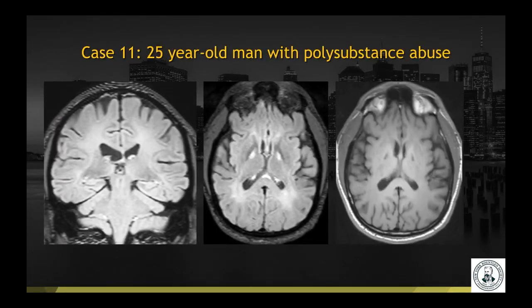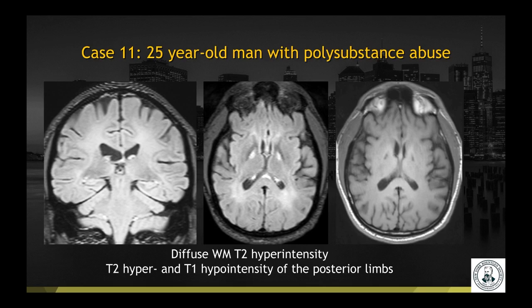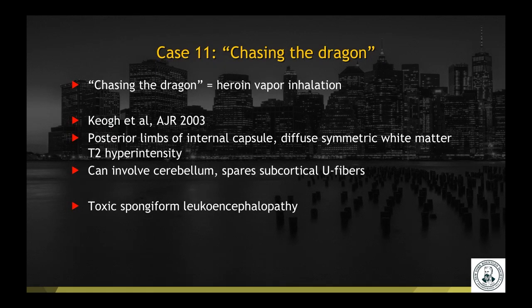Case number 11 is a 25-year-old man with polysubstance abuse. Imaging shows diffuse white matter T2 hyperintensity — very ill-defined — as well as T2 hyperintensity and T1 hypointensity of the posterior limbs of the internal capsules. This was a case of chasing the dragon, or inhalation of heroin vapor. It has a typical distribution with symmetric, ill-defined, diffuse white matter abnormality with sparing of the subcortical U-fibers.